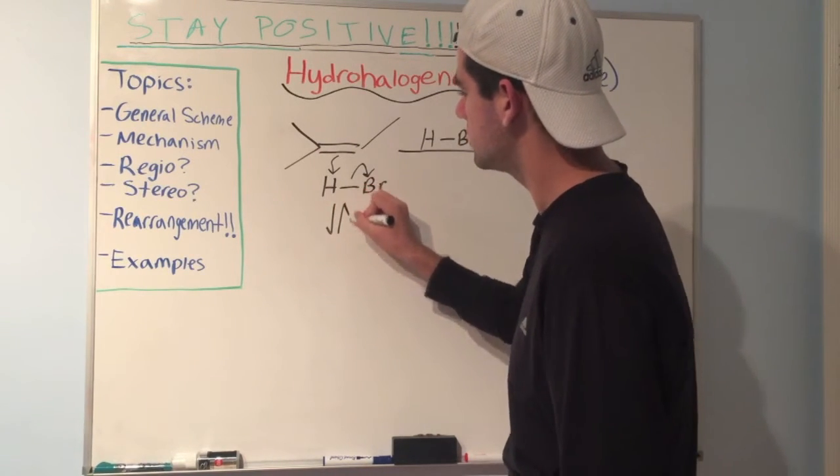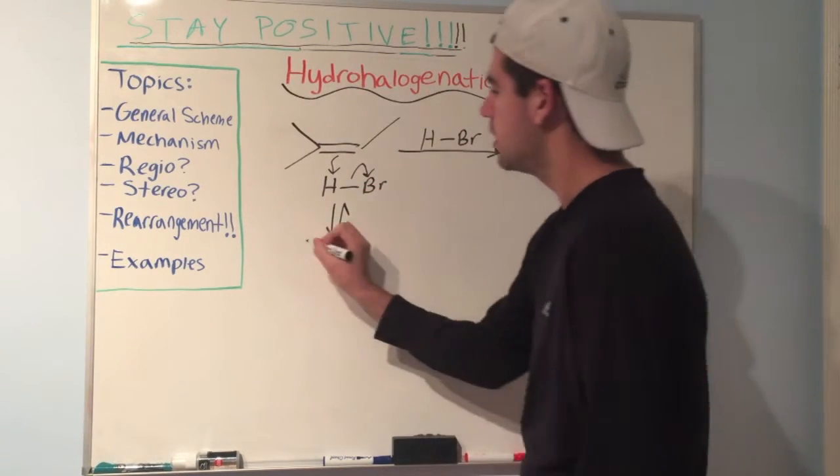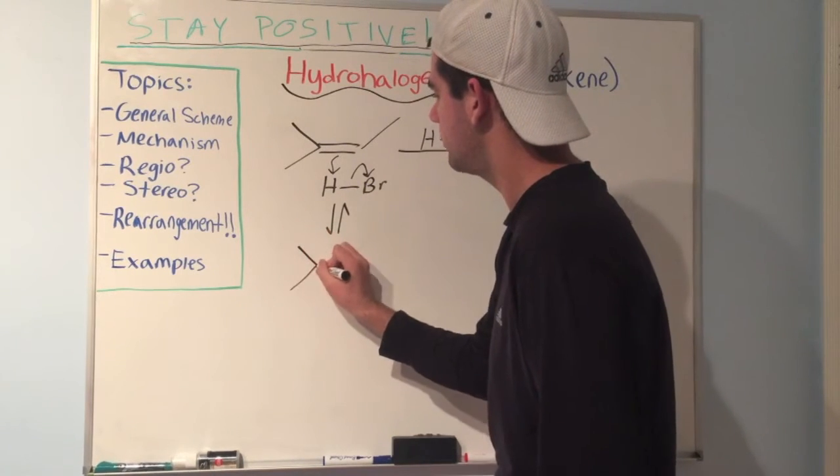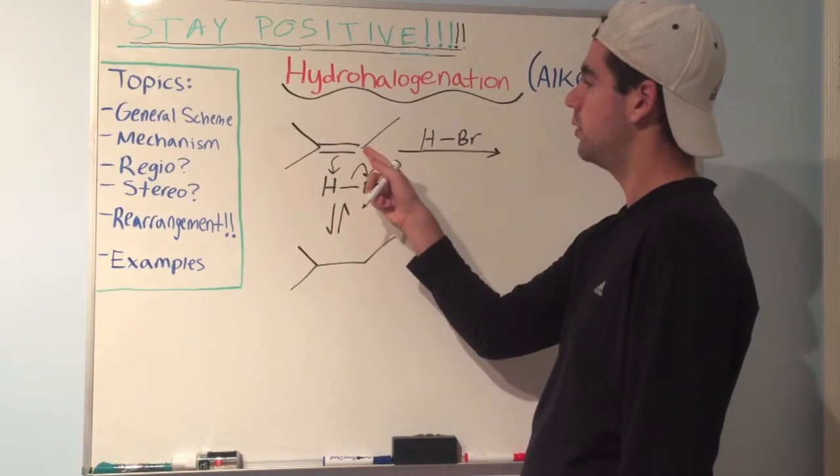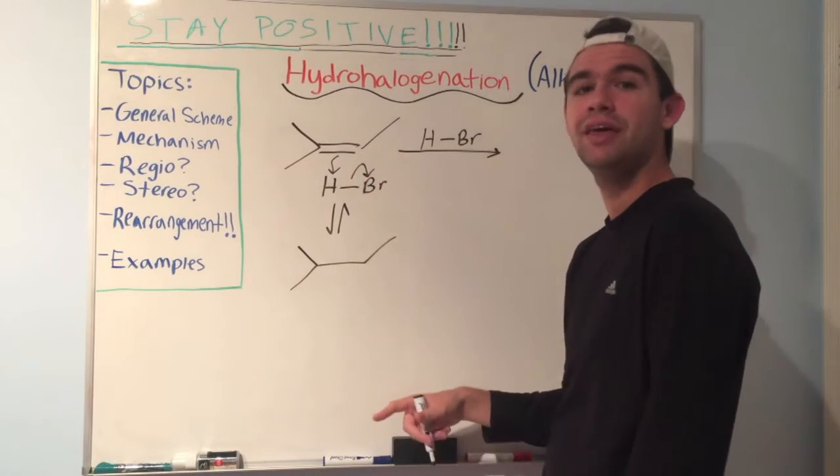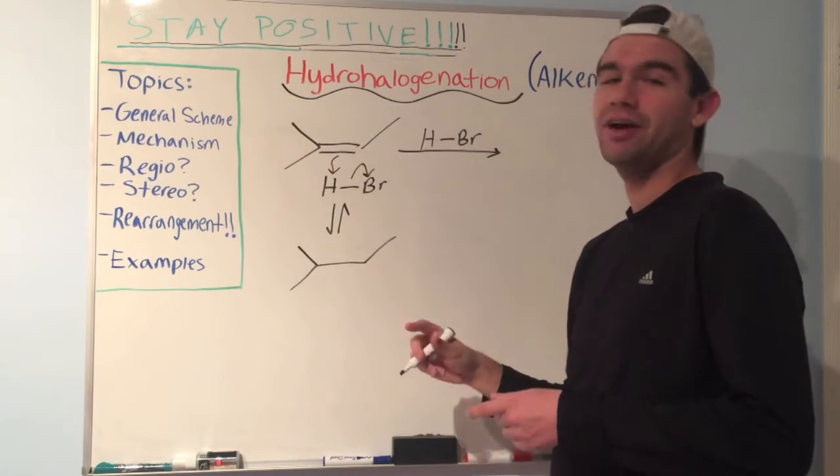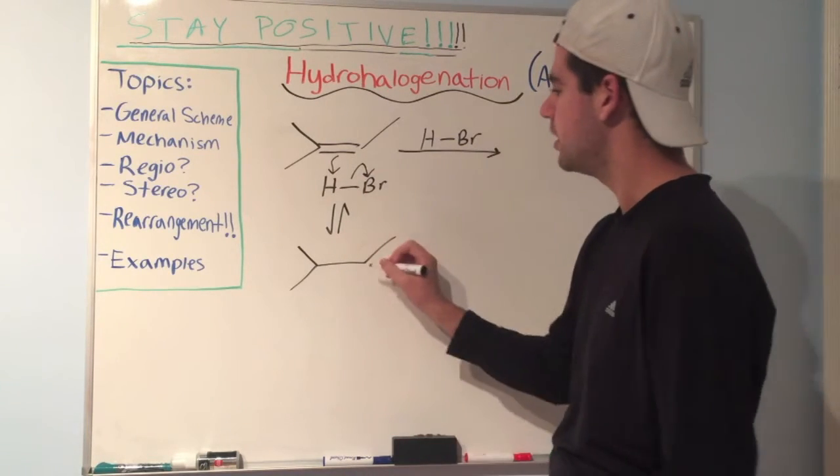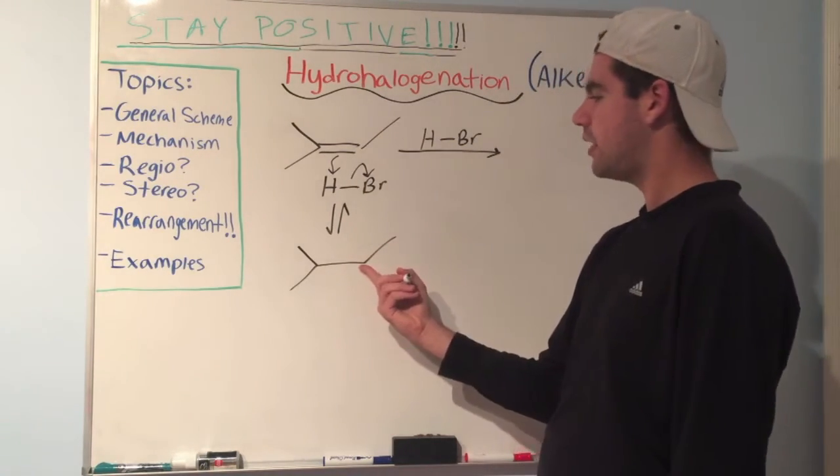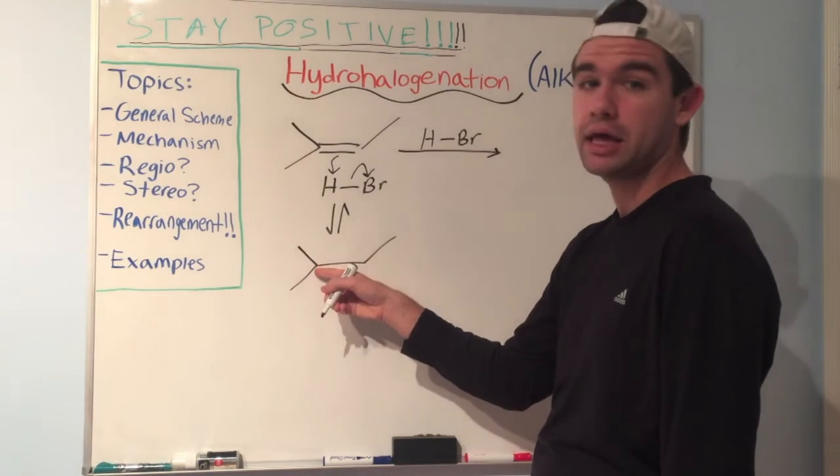Remember to draw double arrows because it's acid-based chemistry. So right off the bat, I'm going to tell you that the proton, the hydrogen, will go to this carbon and not this carbon. If you've watched the hydration video, you'll probably get a sense of what that means in terms of regiospecificity. So what does that mean? That means our added hydrogen is here. We have a carbocation over here.